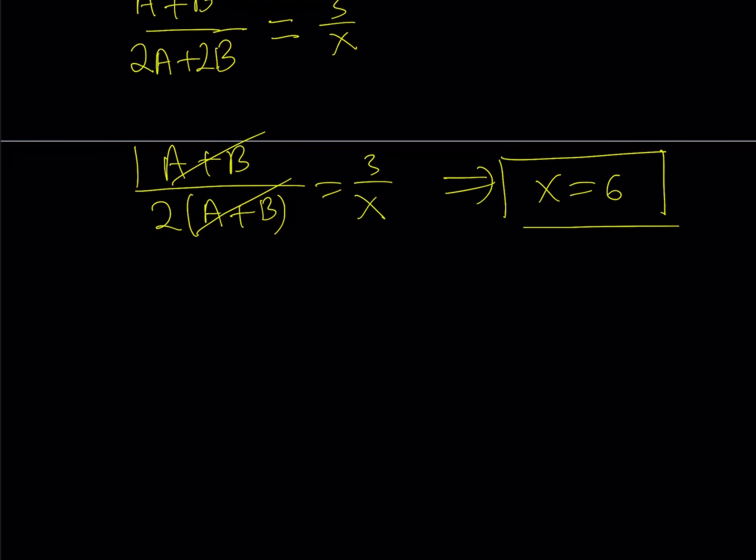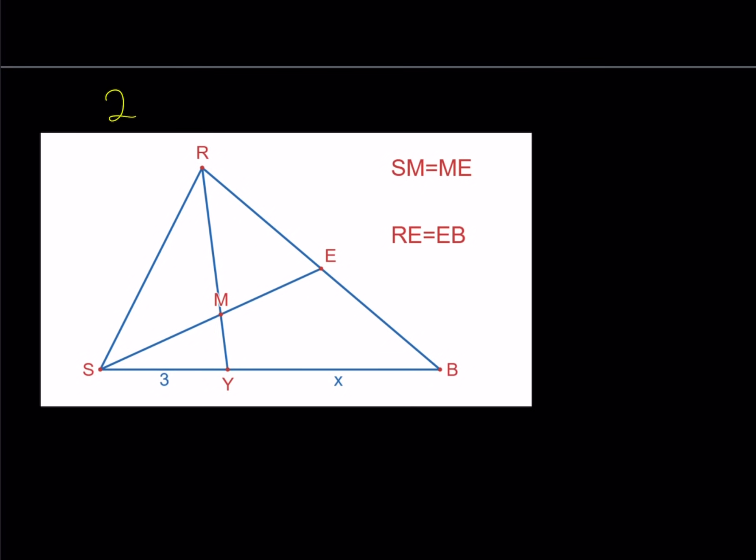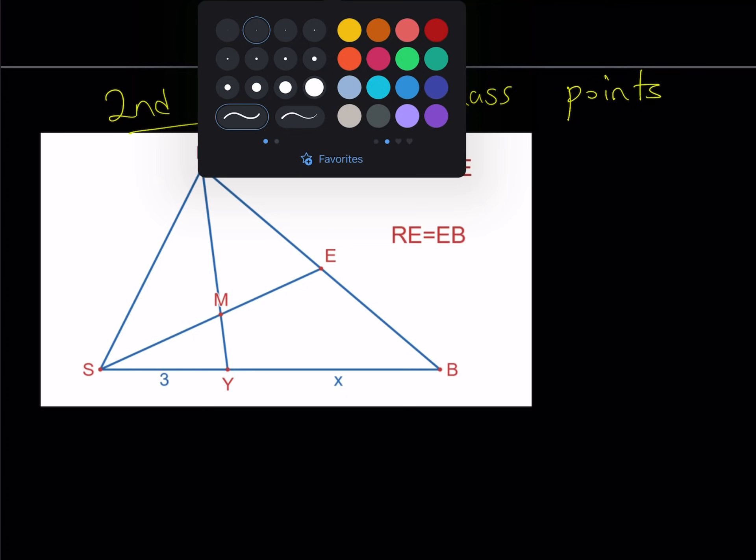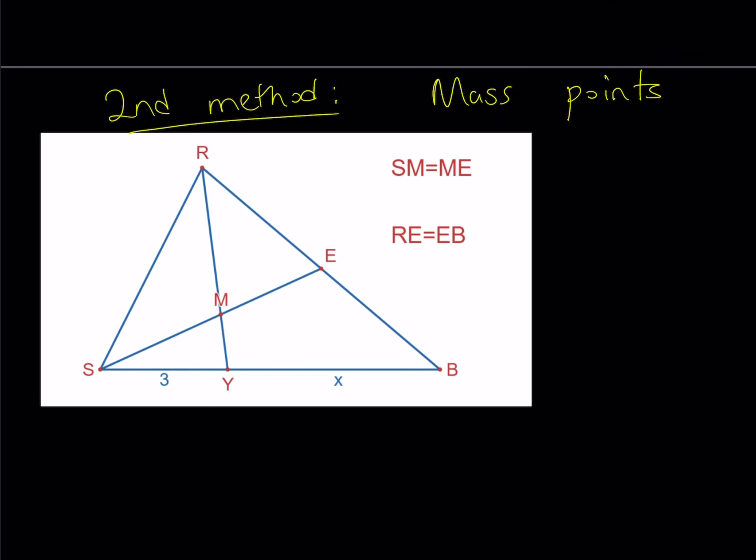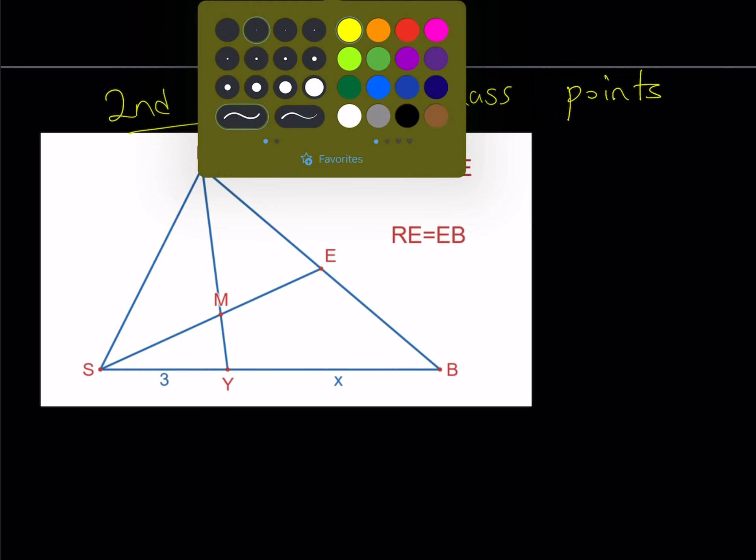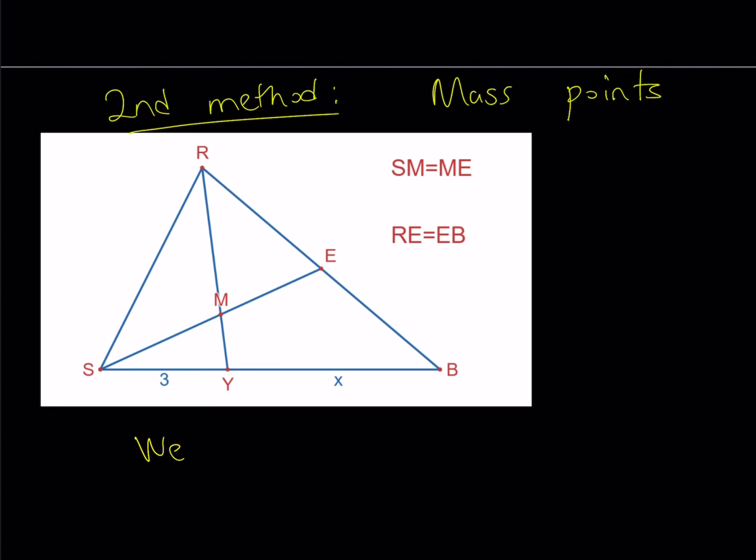Let's go ahead and talk about the second method. Now what does my second method involve? So the second method involves what's called mass points. I hope you are familiar with that. If not, please Google it and take a look because it's a really cool topic in geometry. So mass points basically tells us that we can just assign weights to the vertices. And here's the rule that we need to follow when we're assigning weights.